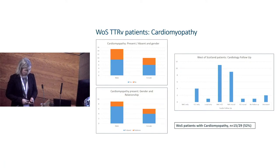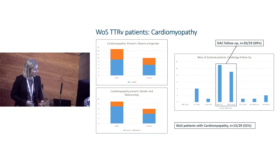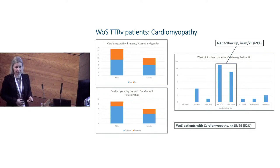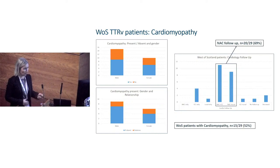Looking at follow-up of individuals in this cohort, there's a variety — some seen at the ICC, some at the NAC, some by local cardiology. Although all gene-positive individuals are offered attendance at the National Amyloidosis Centre, only two-thirds were actually attending. This highlights that a number of individuals don't feel it's practical to travel to the National Centre, suggesting a need to reassess how we offer treatment. We're hoping in the west of Scotland to have a local amyloidosis multidisciplinary team.